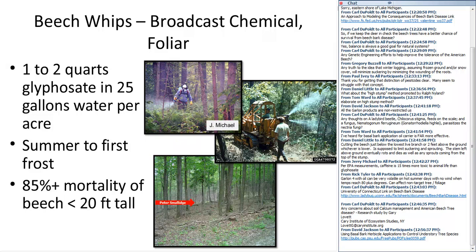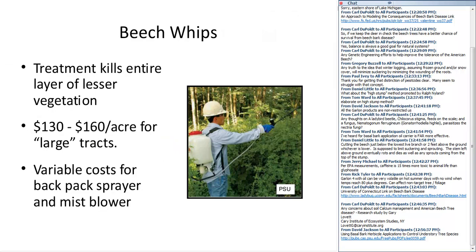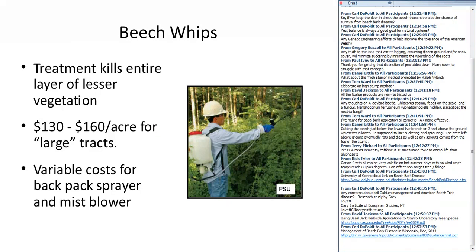In the broadcast treatments, you're going to have control over the entire understory. So if you have desirable stems, they're going to be collateral damage, but typically there's not enough of those to warrant much concern. If you do have enough, and this is why we use integrated vegetation management to see what's out there, then you may need to consider some other options.